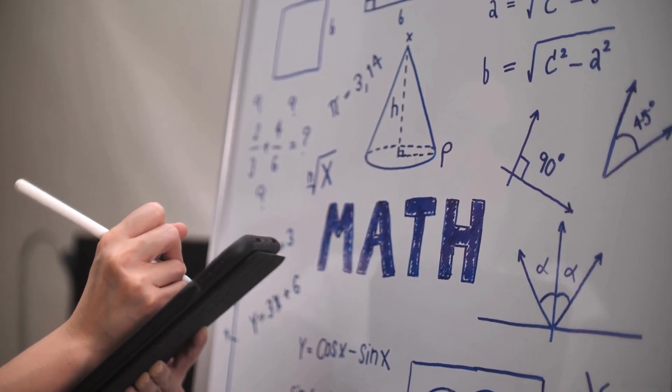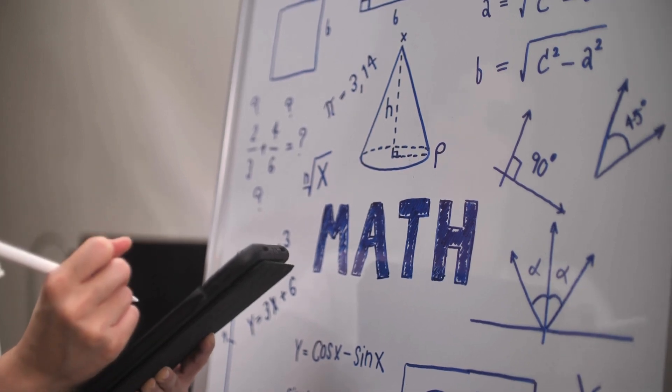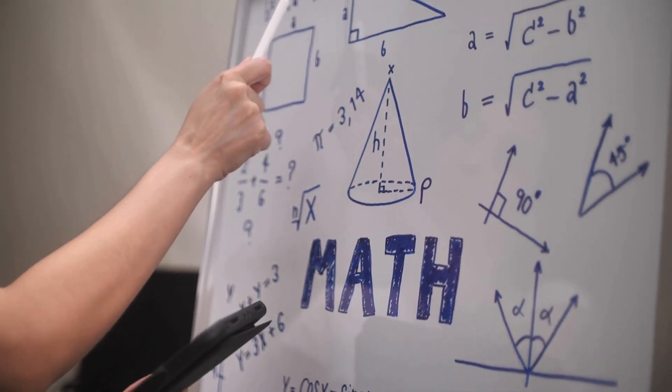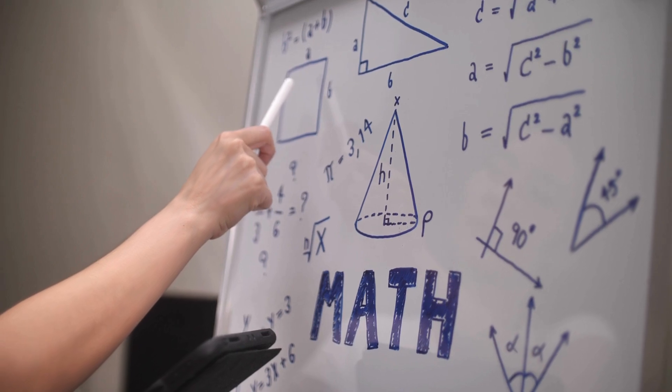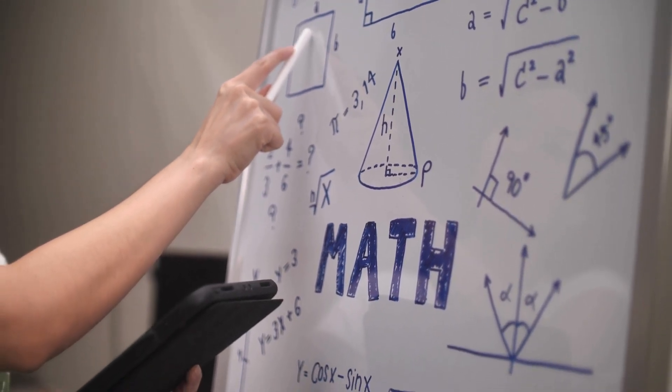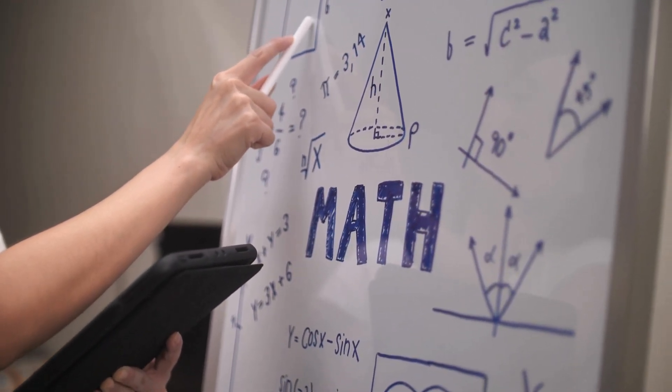In popular culture, pi has become a symbol of mathematical prowess and intrigue. Pi Day, celebrated on March 14, 3-1-4, honors this mathematical constant with activities, contests, and events worldwide.